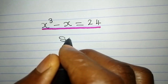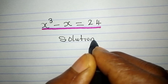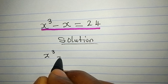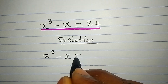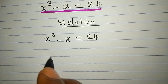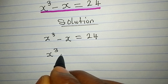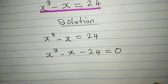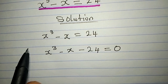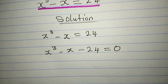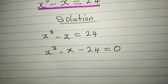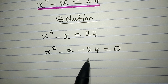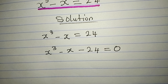Let's provide the solution to this problem: x to the power of 3 minus x equals 24. This means we have x to the power of 3 minus x minus 24 equals 0. I moved 24 to the left so it becomes negative 24. Now the next thing is we want to factorize, but as it is now we may not be able to factorize this unless we introduce other terms.